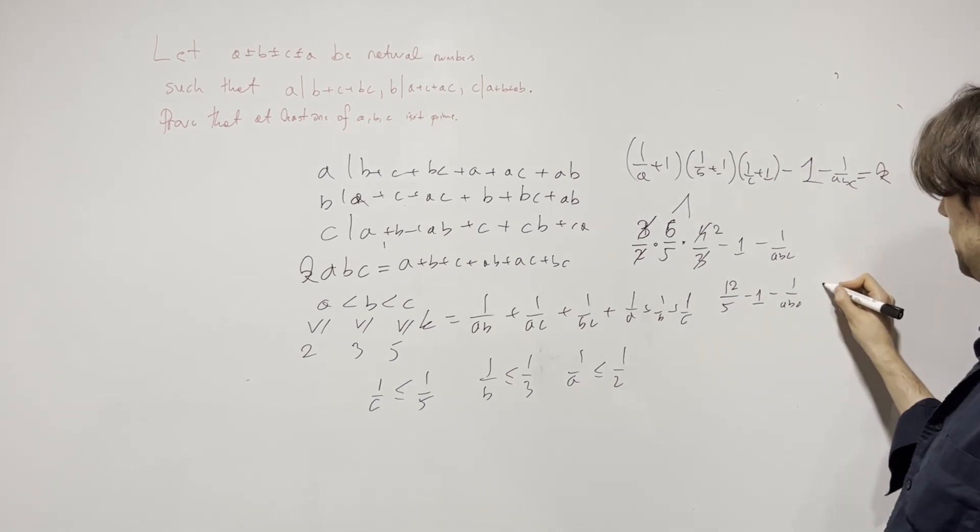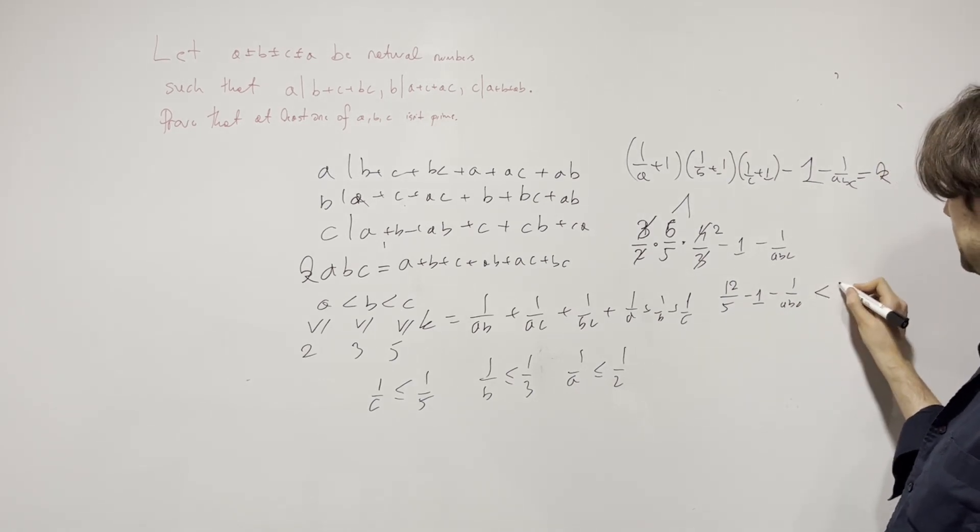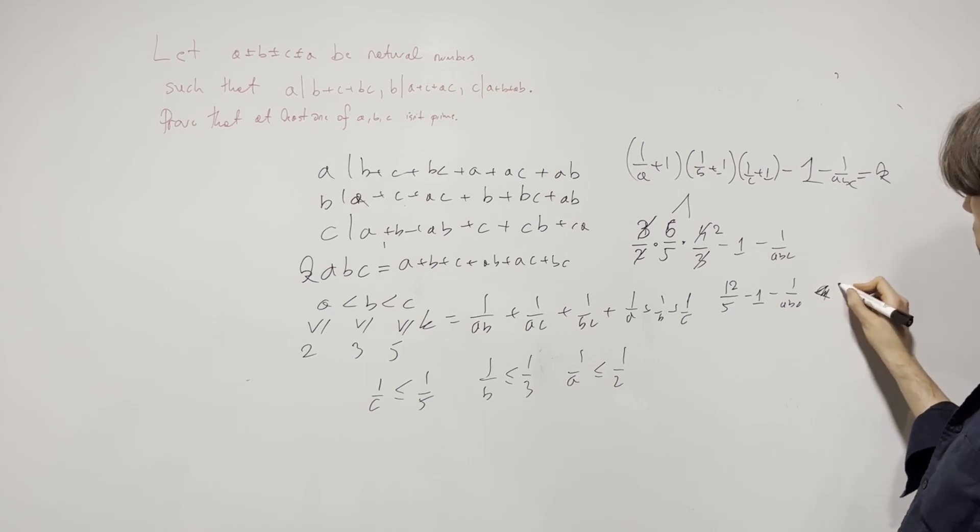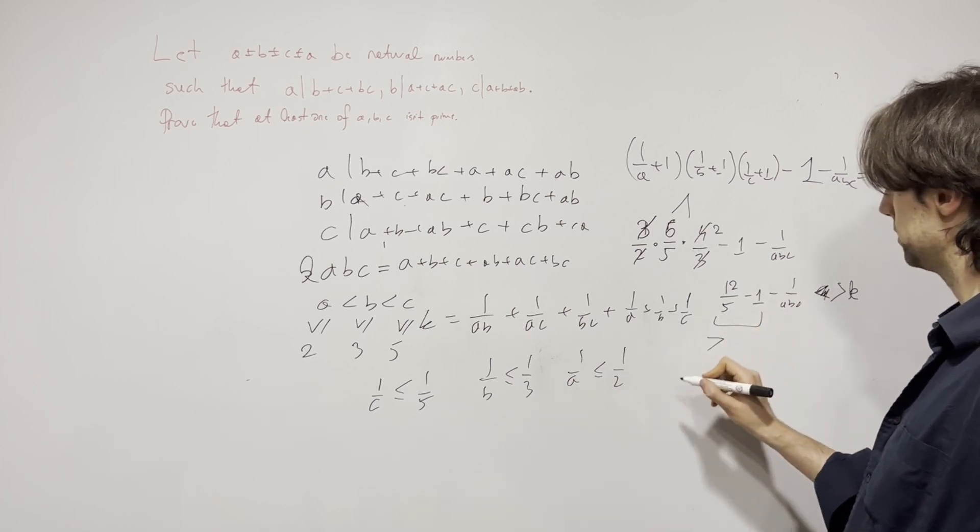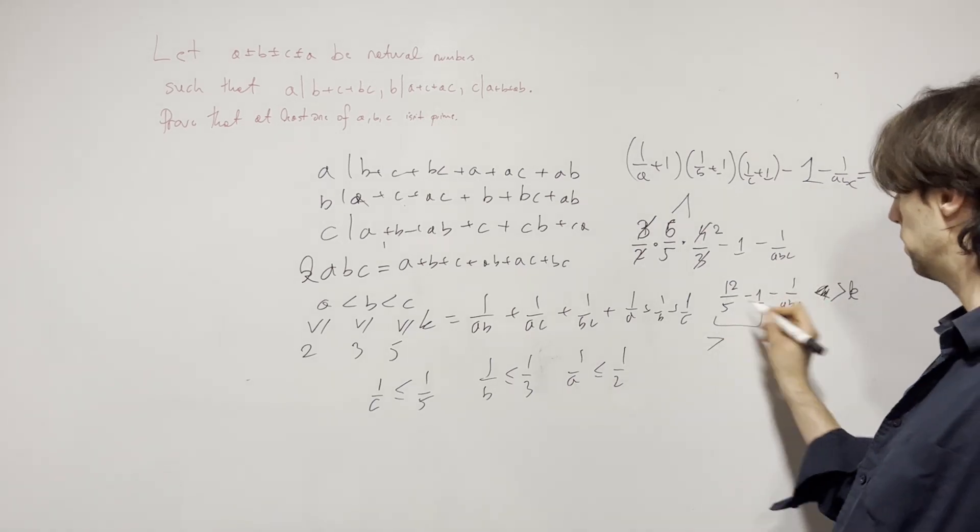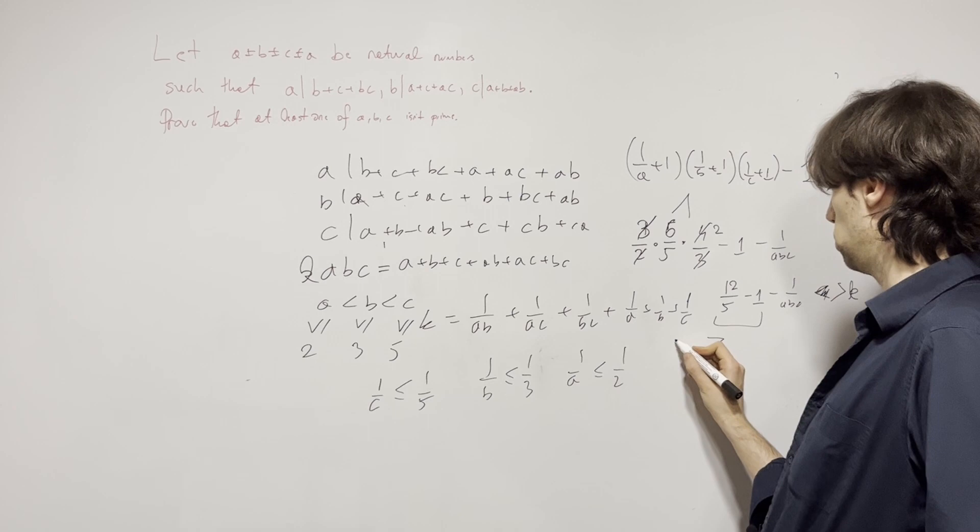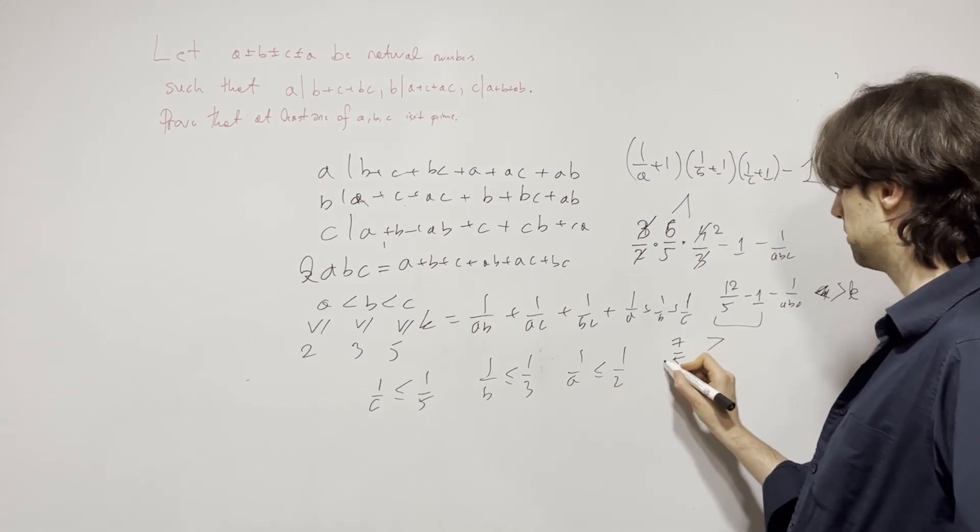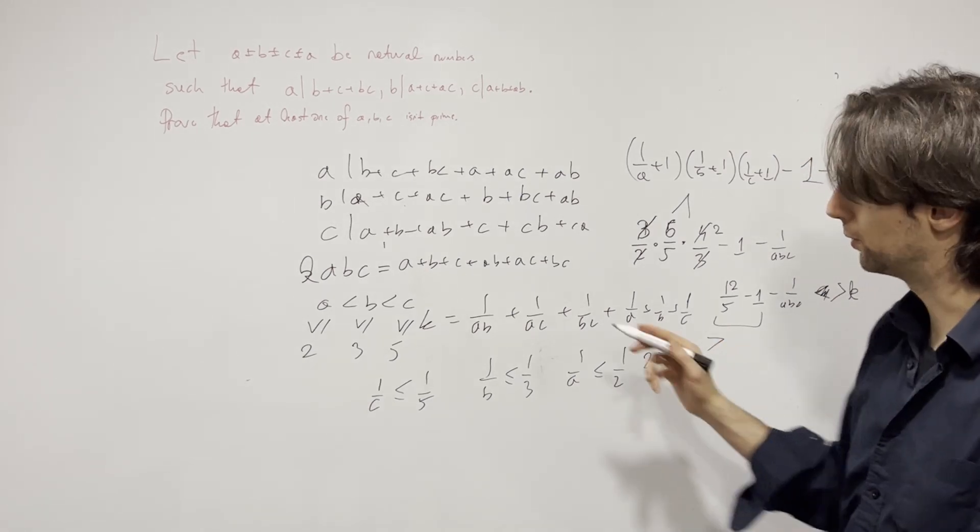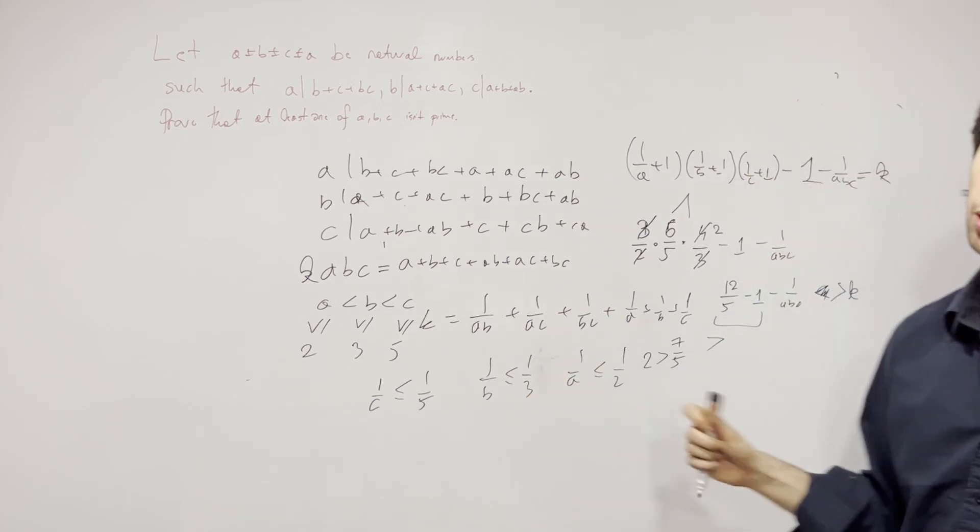And this thing is going to give us, this is, what's it called? This is less than, actually no, this is greater than K, and this thing right here, this whole thing is then less than 12 over 5 minus 1, which is 7 over 5, which is less than 2. So it means K has to be equal to 1.